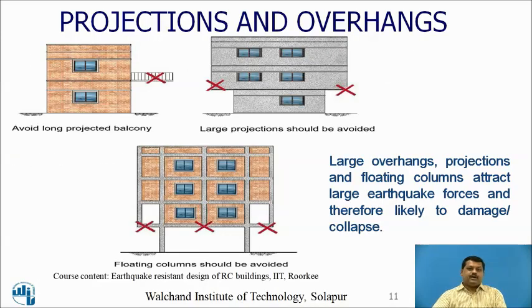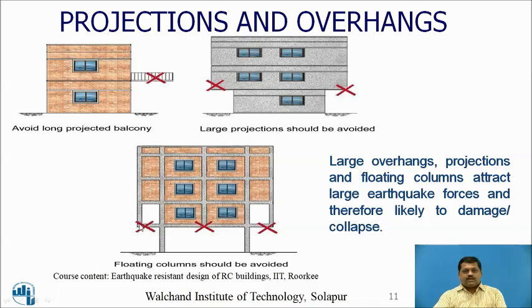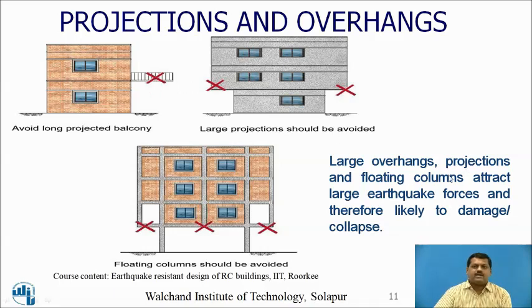Next is projections and overhangs of the building. Avoid long projected balconies — the length of a cantilever should be moderate, not large. Large projections beyond the base or ground storey of the building should be avoided. Floating columns must also be avoided — a column taken from a beam is a very unfavorable practice used by some structural engineers and must not be done. Large overhangs, projections, and floating columns attract large earthquake forces and are likely to cause damage and collapse.